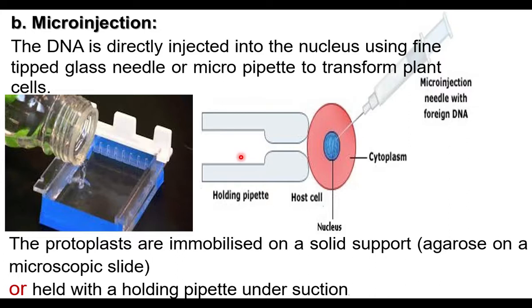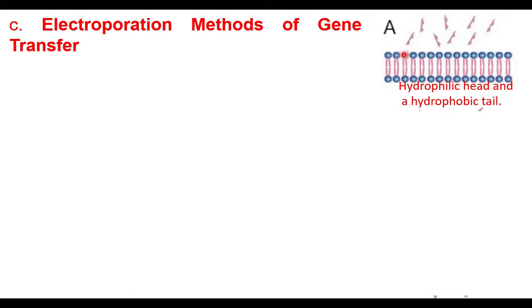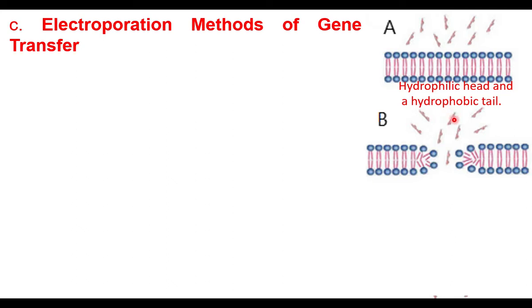The next direct method is electroporation. The cell membrane is a lipid bilayer where the middle part is hydrophobic, so DNA — being hydrophilic — cannot pass through. By applying an electrical field, temporary pores are created. When an electrical pulse is applied, an opening is created surrounded by hydrophilic heads, through which DNA can pass and enter the cell.